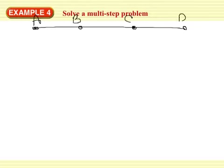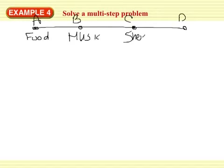All right, so we know that the music store is halfway between the food court and the shoe store, and the shoe store is halfway between the music store and the bookstore. I have a drawing done.